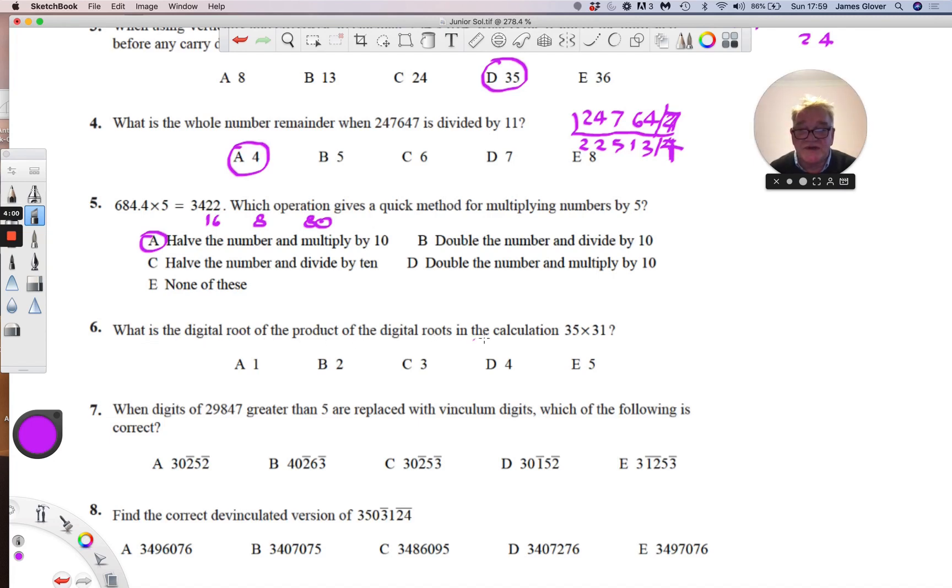The digital root of the product of the digital roots of this calculation: we write down the two digital roots 8 and 4 and multiply to get 32, and the digital root of 32 is 5.